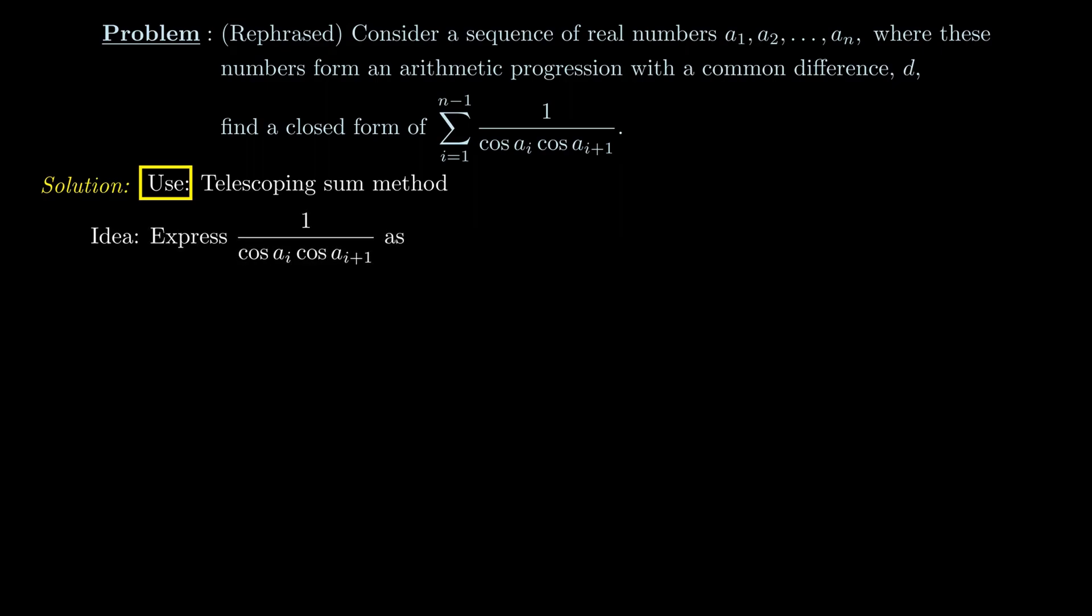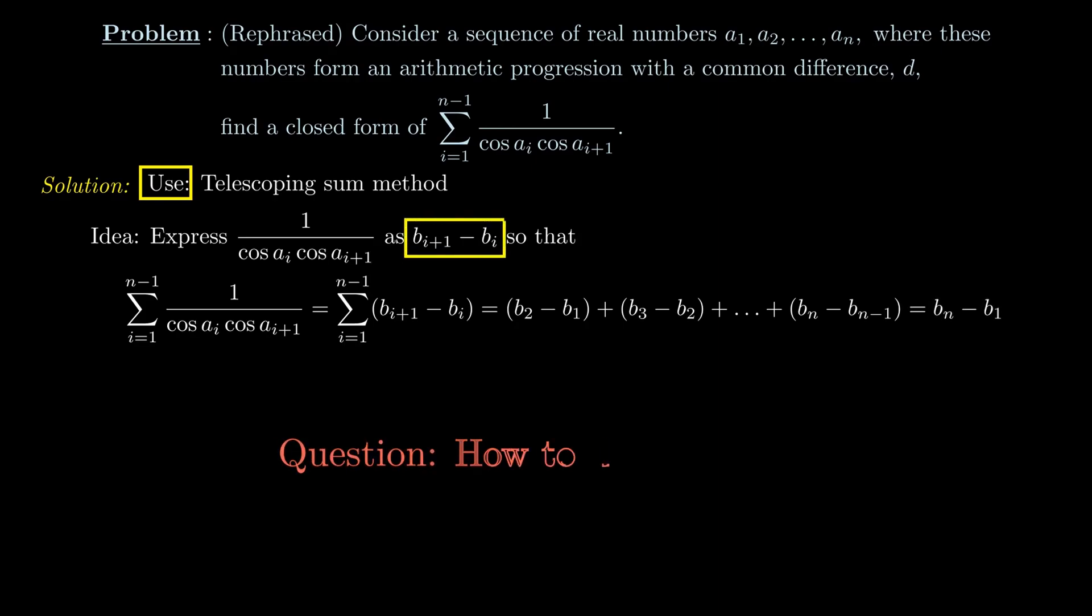The main idea in this solution is to try and express the sum as a difference of two consecutive terms from a sequence, say bᵢ₊₁ minus bᵢ, so that if you add up everything, all the terms in the middle will be cancelled out, leaving us with just bₙ minus b₁. So the question now is how do we determine what the sequence bᵢ is?